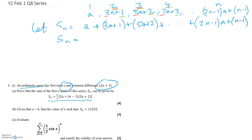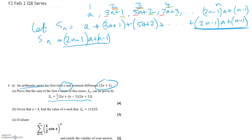For proving an arithmetic series sum, the method is to write all the terms in reverse order and add the two lines together. So the reversed row starts with (2n−1)a plus (n−1) at the front, and ends with a, then 3a plus 1, then 5a plus 2, and so on.